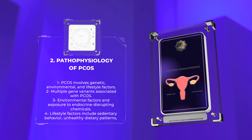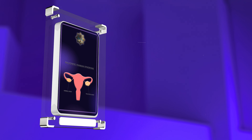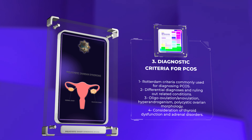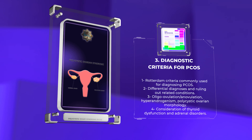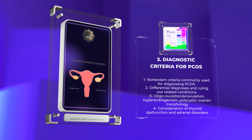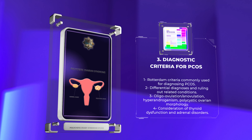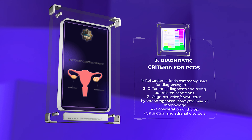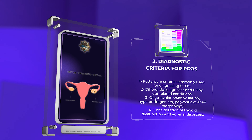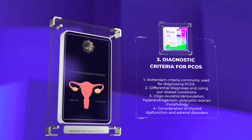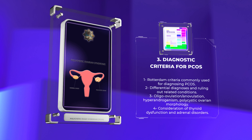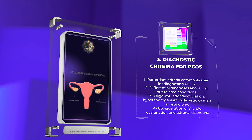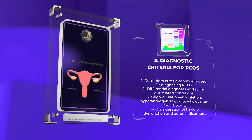Diagnostic criteria for PCOS: Diagnosing PCOS can be challenging due to its heterogeneous nature. The Rotterdam criteria, which include the presence of two out of three features — oligo-ovulation or anovulation, clinical and/or biochemical signs of hyperandrogenism, and polycystic ovarian morphology on ultrasound — are commonly used to diagnose PCOS. However, it's important to consider other differential diagnoses and rule out related conditions such as thyroid dysfunction and adrenal disorders.